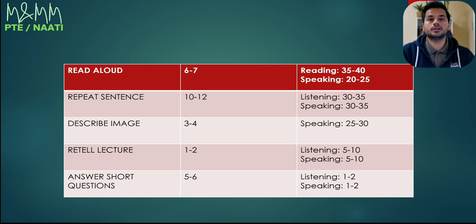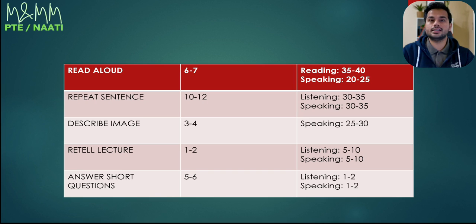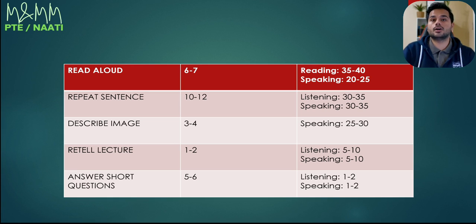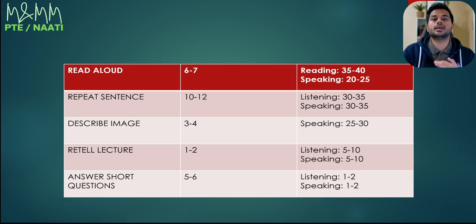So if you look at the speaking section, these are the five speaking topics in the PT exam. Read aloud is the very first topic you get. These are the updated number of questions after the changes that happened last year — you get about six or seven questions for read aloud. This one gives you marks in reading and speaking both. Speaking is about 20 to 25 marks, and reading is about 35 to 40 marks — out of 90. Students often take this topic for granted, but if you are struggling in your reading module, do not take read aloud for granted. It's almost double marks in reading compared to the speaking section.